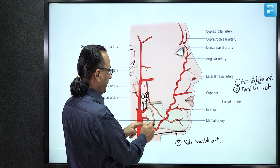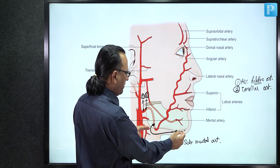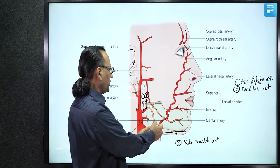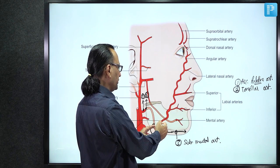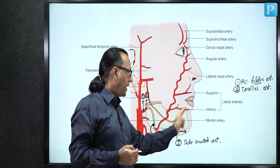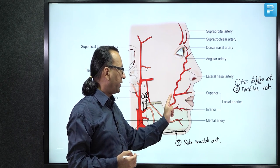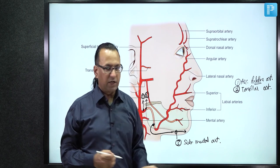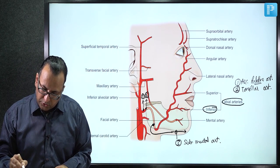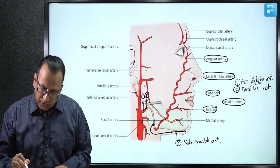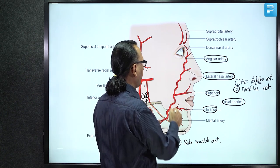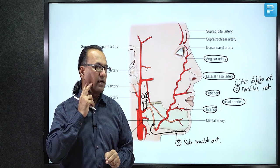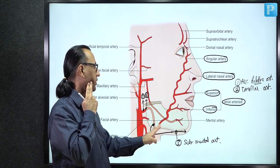On the face, the facial artery gives four branches: inferior labial artery (lower lip), superior labial artery (upper lip), lateral nasal artery (lateral side of nose), and angular artery (medial angle of eye). The facial artery is quite tortuous on the face to allow for muscle and skin movement; facial pulse can be felt by having the patient clench teeth to activate the masseter.